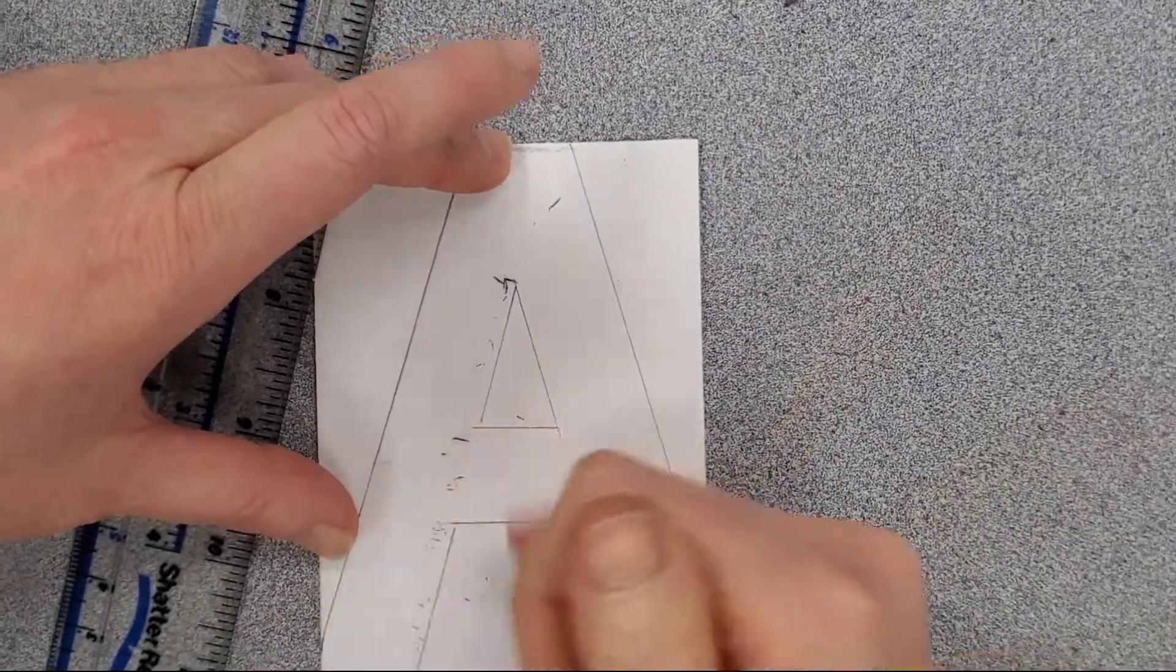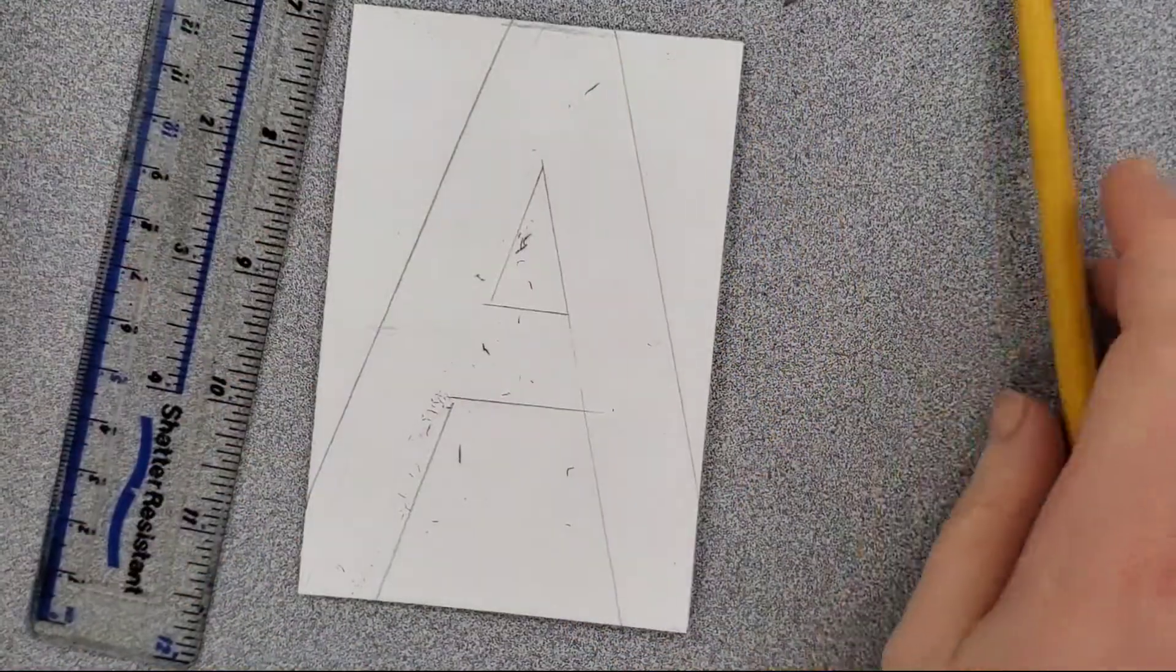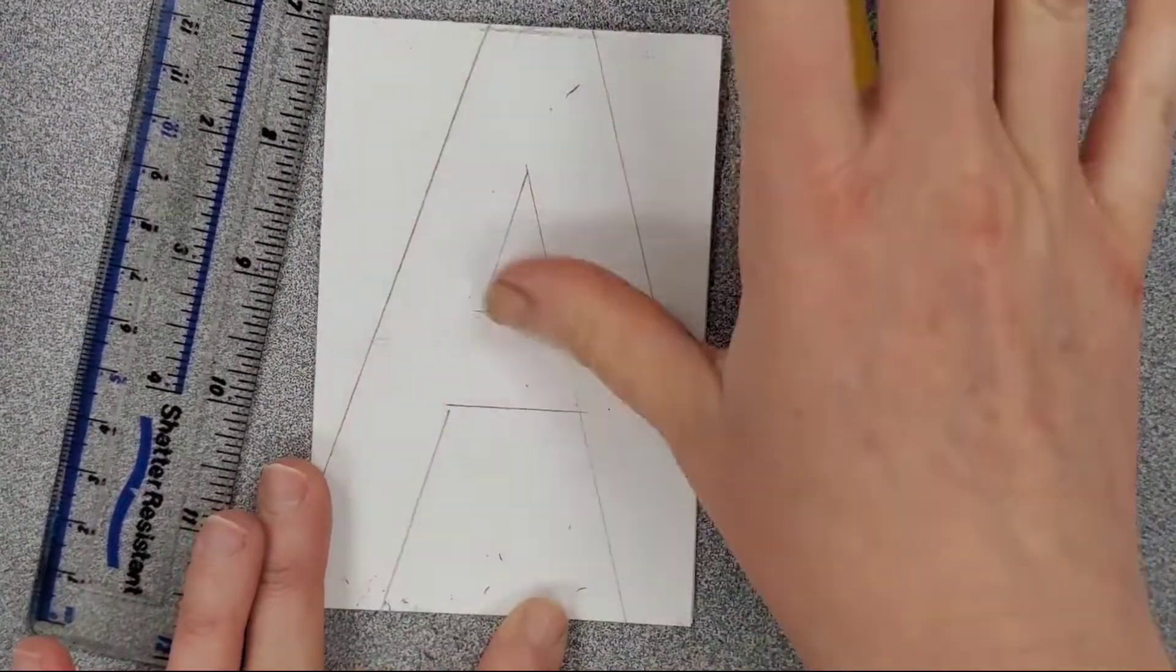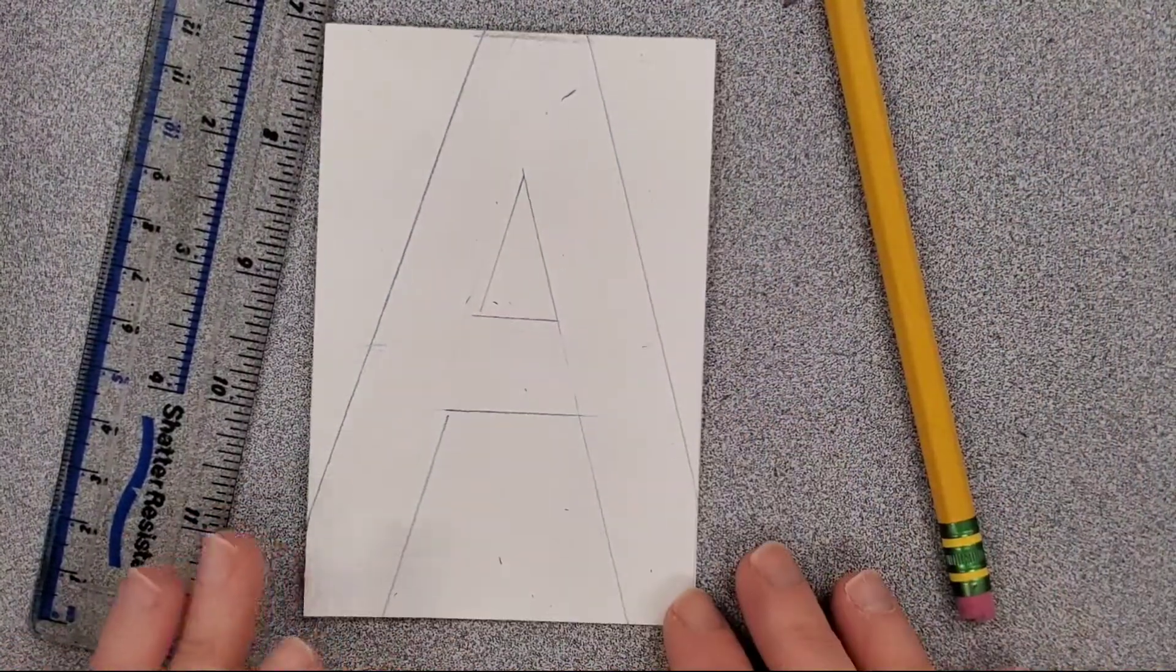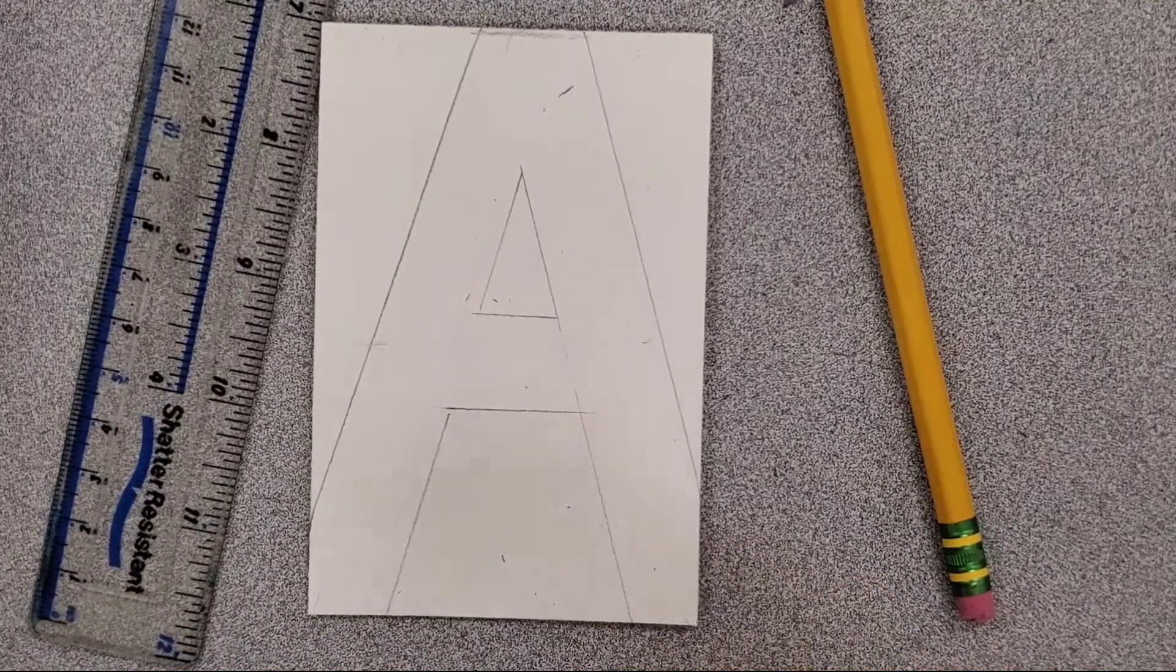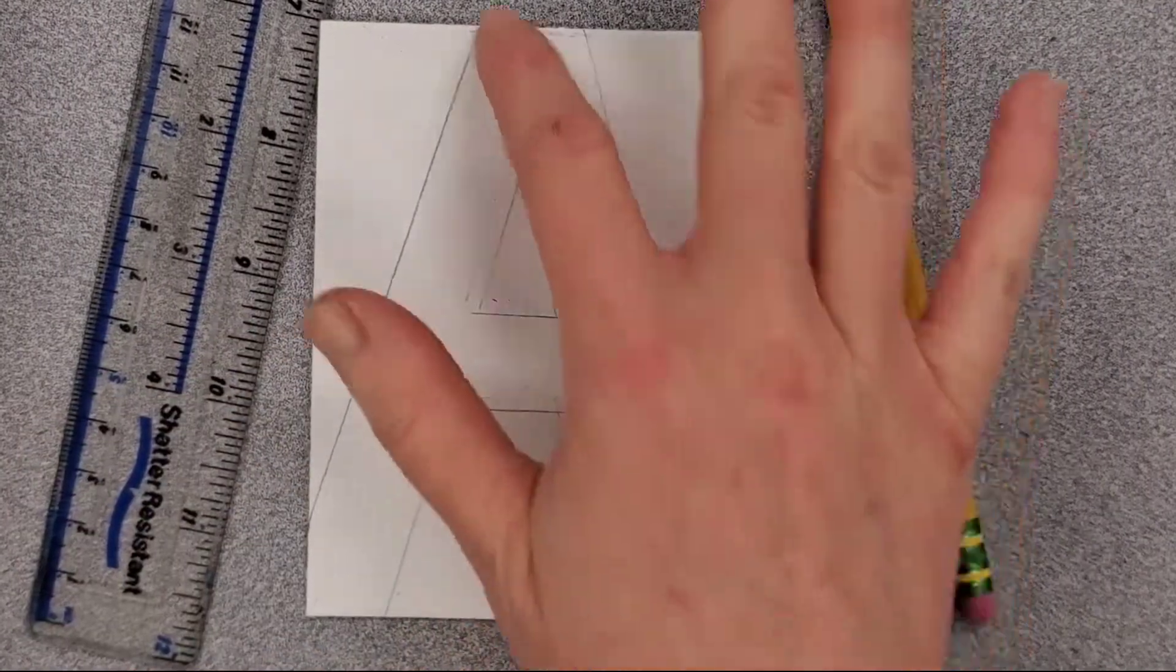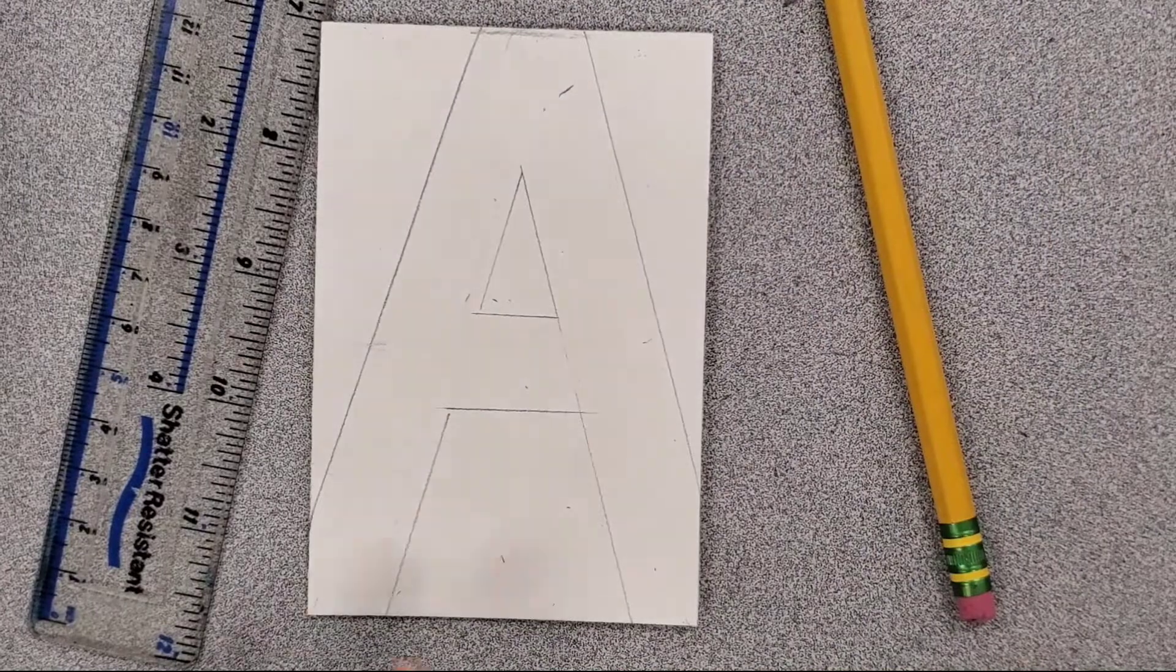So here's what I have. Right now I have a block letter A - it's even thickness, touches top, bottom, side to side, uses the ruler, and uses the straightaway of the box.